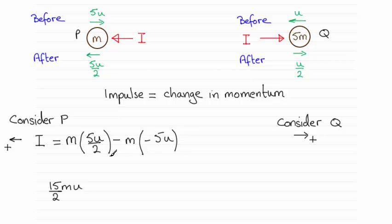So when you work this out, you'll find that you've got 5u over 2 plus another 5u. I should have mentioned the m there as well, which gives us a total of 15mu over 2.